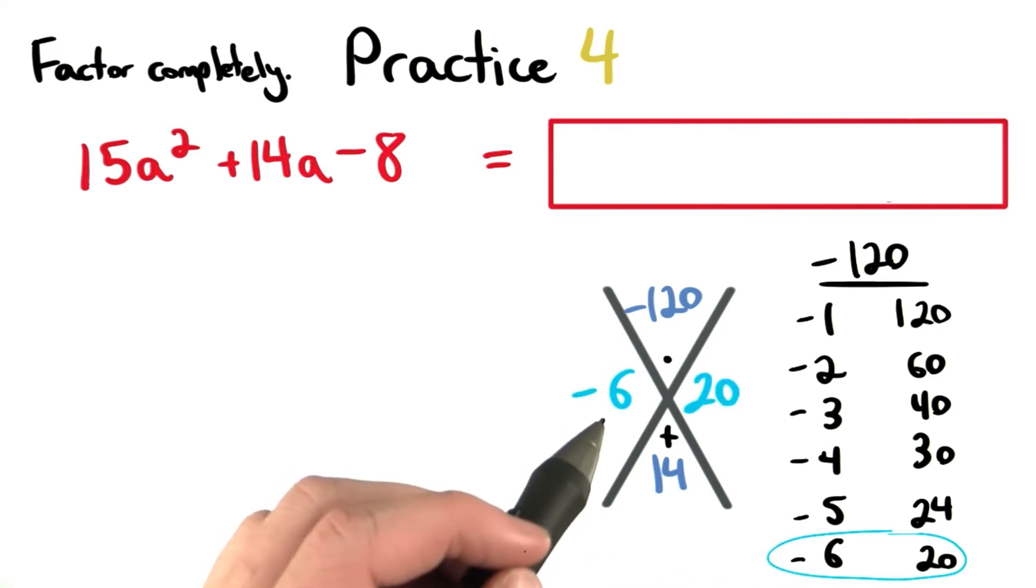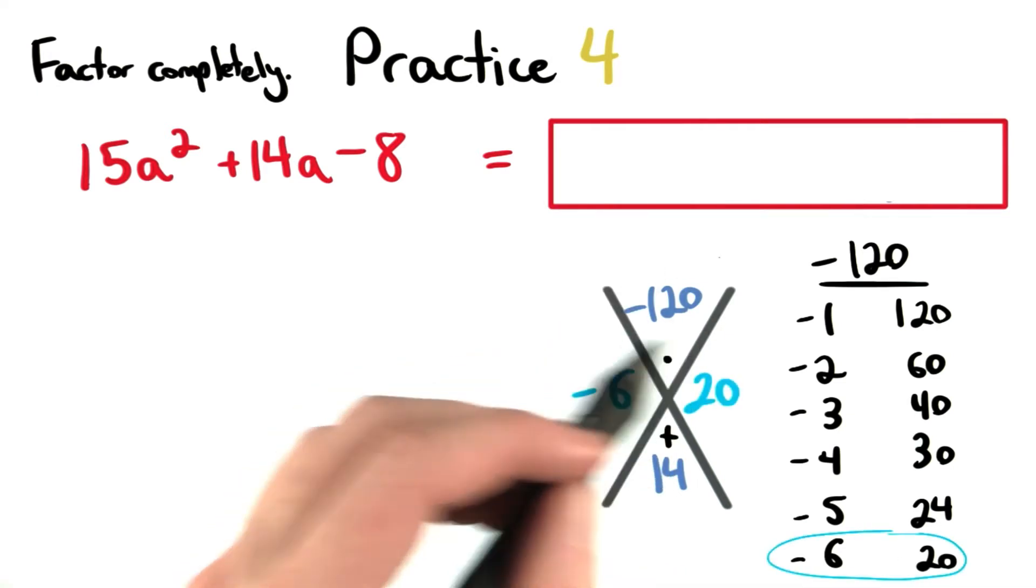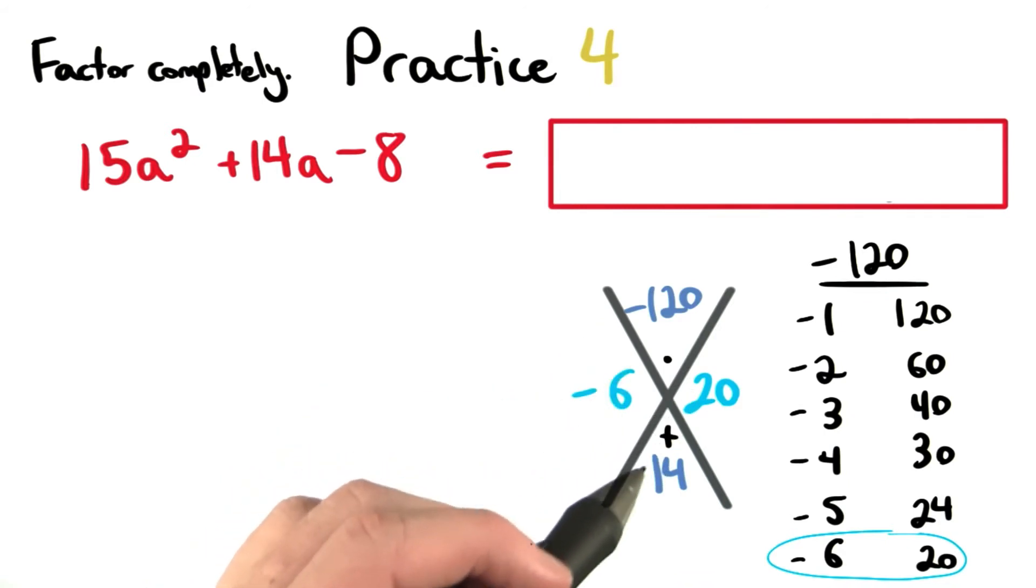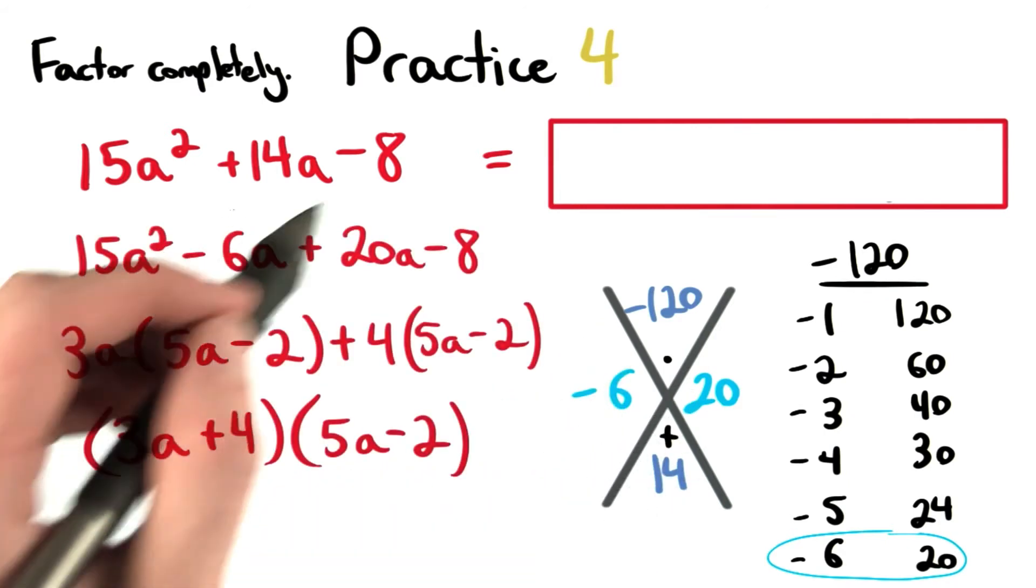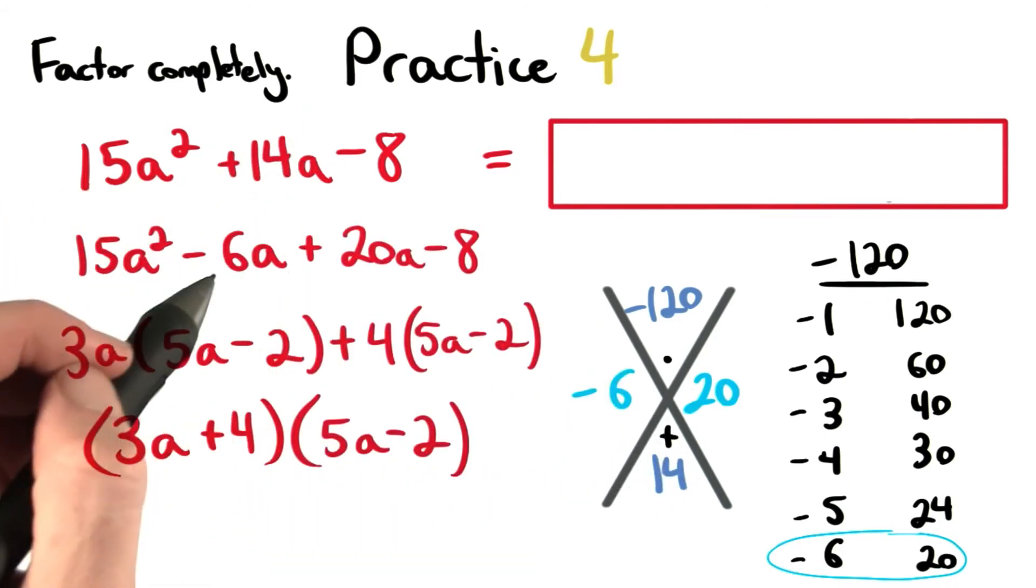We can check this real quick to make sure negative 6 times 20 multiplies to negative 120, and that they sum to positive 14. It's best to rewrite 14a with the negative term first.